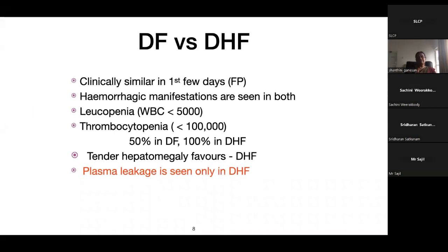Clinically, DF and DHF are similar in the first few days during the febrile phase. Both can have hemorrhagic manifestations due to capillary fragility — mucosal bleeding and so on — and the tourniquet test can be positive in both. Leukopenia below 5,000 is usually seen after the second or third day; at the beginning it can be normal or slightly elevated. Thrombocytopenia — less than 100,000 platelets — can be seen in about 50% of dengue fever cases.